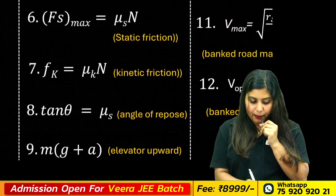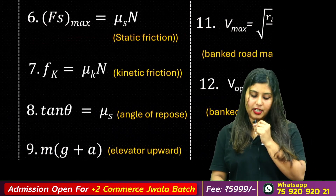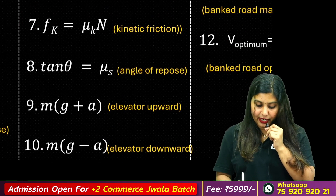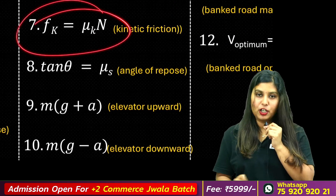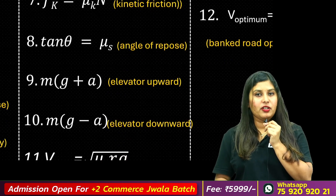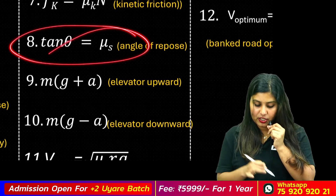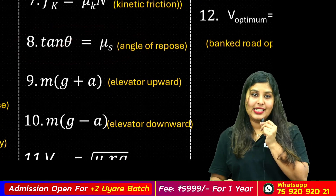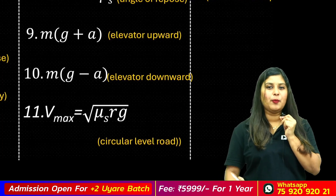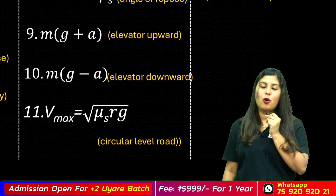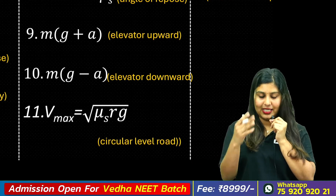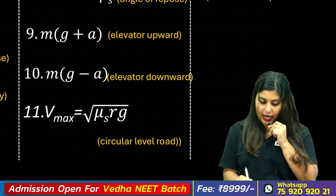The equations for static friction: fs max equals mu_s into N. Kinetic friction: Fk equals mu_k into N. The angle of repose gives mu_s equals tan theta.